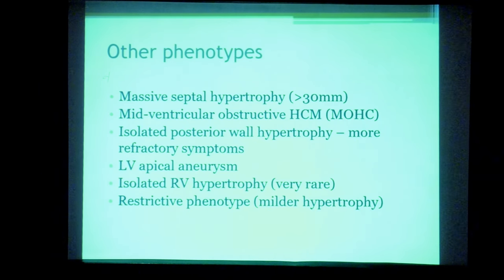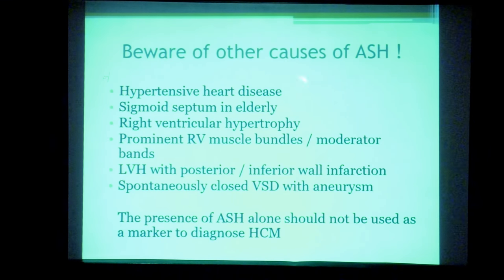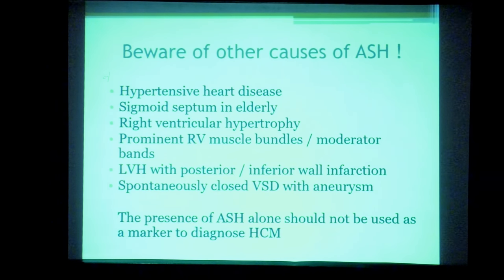A restrictive phenotype of HCM is one where hypertrophy is not very marked but the patient predominantly mimics restrictive cardiomyopathy. Before diagnosing HCM, one must remember that other causes of asymmetrical hypertrophy exist and the presence of ASH alone is insufficient for diagnosis. Other causes include hypertensive heart disease, sigmoid septum in the elderly, right ventricular hypertrophy or prominent RV muscle bands anterior to the IVS, asymmetrical LVH from posterior/inferior wall infarction or thinning, and rarely a spontaneously closed VSD where aneurysm tissue or the tricuspid valve bulges into the LVOT.